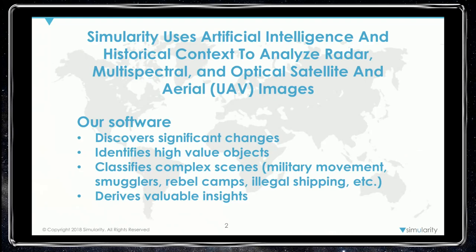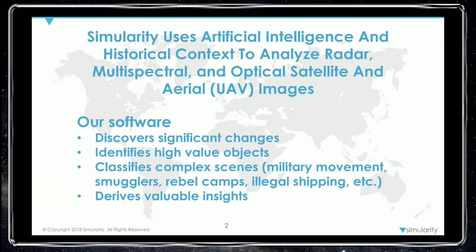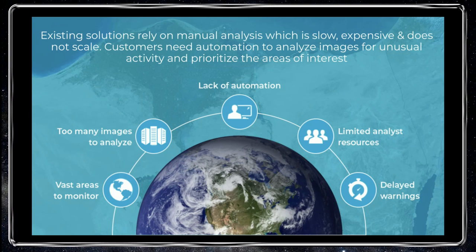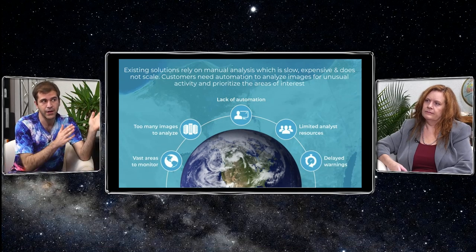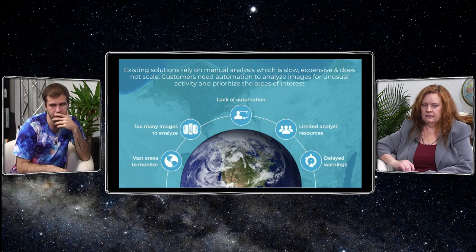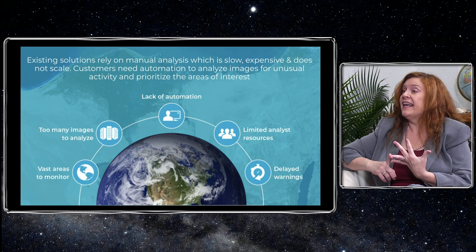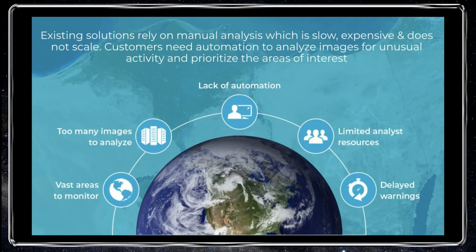Some of the most important use cases include military movements, smugglers, rebel camps, illegal shipping, climate change insights, and deforestation. Manual analysis is really hard — having teams of analysts looking at an image that's changed after a three-month period when data flows are so great means you can't act in time. With software like ours parsing it, if you're trying to stop smugglers or deforestation, you need to know it's happening now. Finding out you lost 10,000 hectares over four months isn't useful.